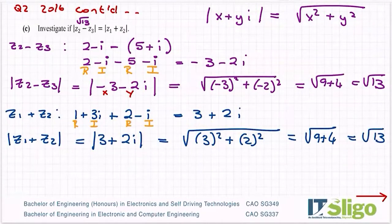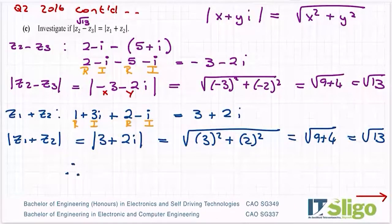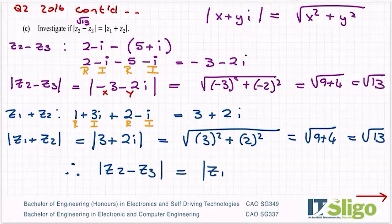So watch that. Can you spot it? The signs don't matter when it comes to the length of the distance from the origin. And that's because a minus number or a plus number squared gives you the same answer. Minus by minus is a plus, plus by plus is a plus. So we conclude then, that's math language for therefore, the modulus of Z2 minus Z3 is equal to the modulus of Z1 plus Z2. A lovely way to finish any sum. See, can you get a therefore into it?